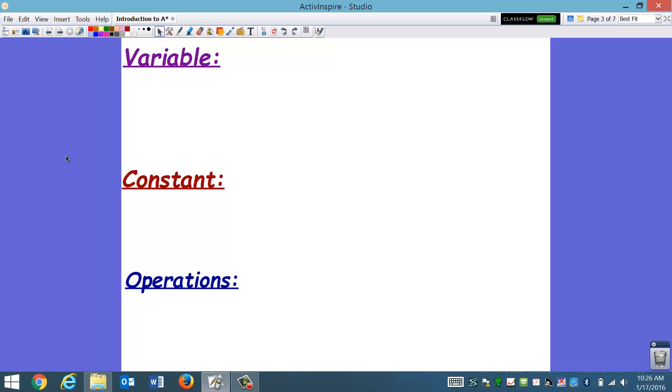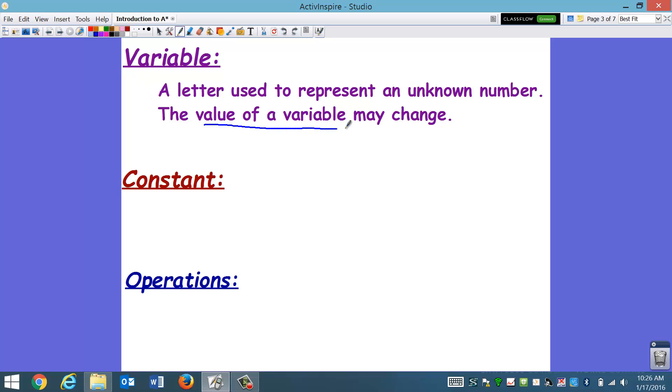So let's start. Our first term is variable. Variable is something that we've already been using in math class, and you've probably heard of it in fifth grade. But a variable is a letter used to represent an unknown number. The value of a variable may change. Okay, so let's look at that. The value of the variable may change.